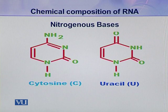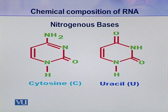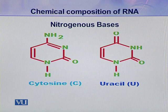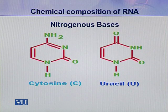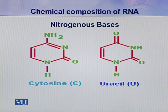The next two types of bases are pyrimidines — cytosine and uracil. Here you can see a difference: in the case of DNA, uracil is not present; instead, thymine was present in the DNA molecule. But here, instead of thymine, uracil is present. So overall, there are five types of nitrogenous bases: adenine, guanine, cytosine, thymine, and uracil. Thymine is only present in DNA molecules, while uracil is only present in RNA molecules.